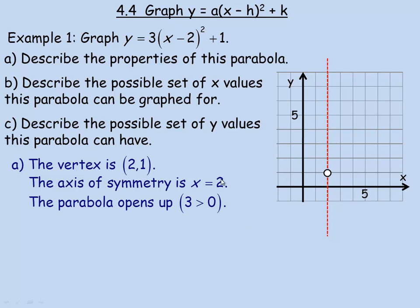The parabola opens up because the value of a — which is 3 in this case — is greater than 0. There are a couple of ways to sketch the graph. You could use the step method, which I'll mention after we find some points. You could also find a point on either side of the vertex and graph them to see if it opens steep or shallow. What I'm going to do is find the point to the left of the vertex that has an x-coordinate of 1, and find what the y-value would be.